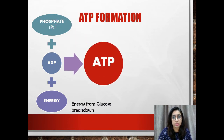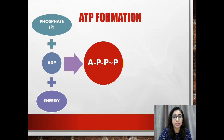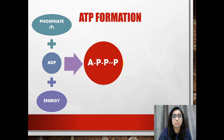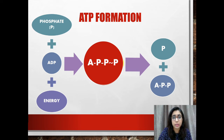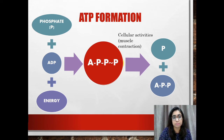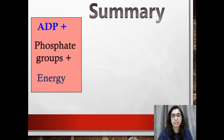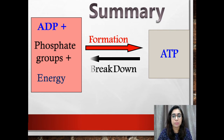The ATP molecule contains a phosphate bond that can be broken easily to release energy. When the cell needs an immediate supply of energy for cellular activities such as muscle contraction, the ATP molecule breaks down into ADP and a phosphate molecule, and the stored energy is released for use by the cell. In summary: ADP plus phosphate plus energy from glucose breakdown forms ATP, and that ATP can then be broken down again into ADP, phosphate, and energy for the cell. ATP is essentially an energy carrier.